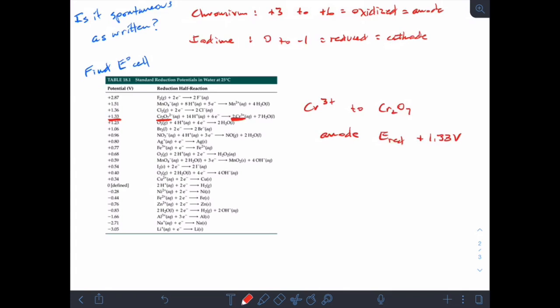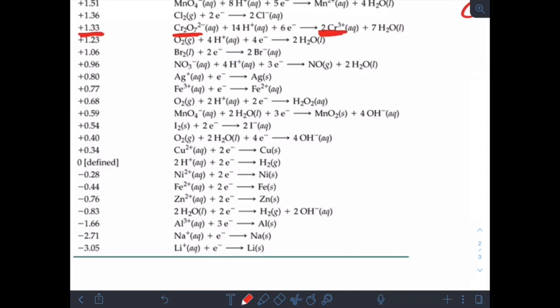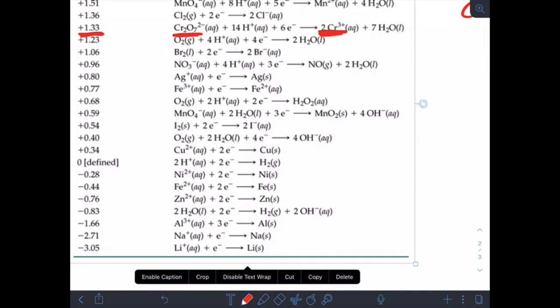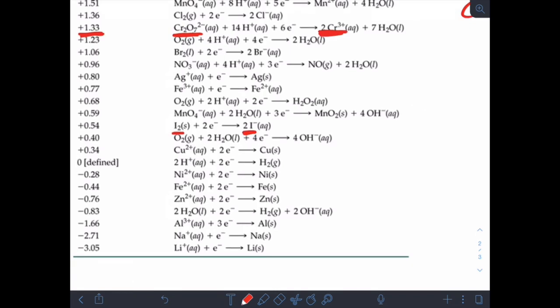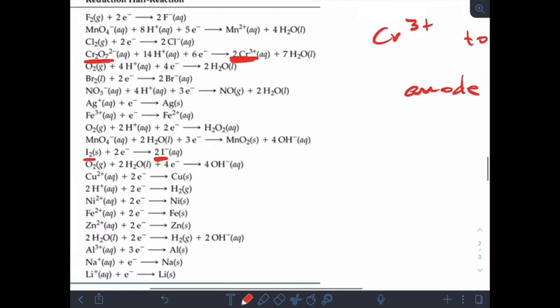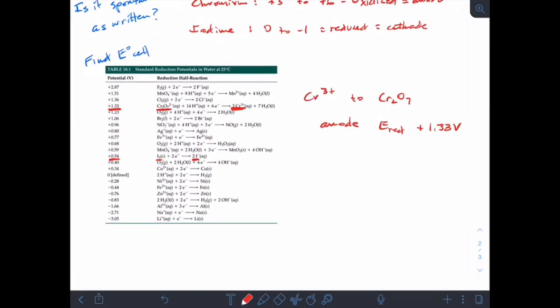And then we're going to look in here and find our I2 to I minus, and look, there's our I2 and our I minus. And our reduction potential for that is right there, 0.54, plus 0.54. So for the iodine, the cathode, the reduction potential is plus 0.54 volts.